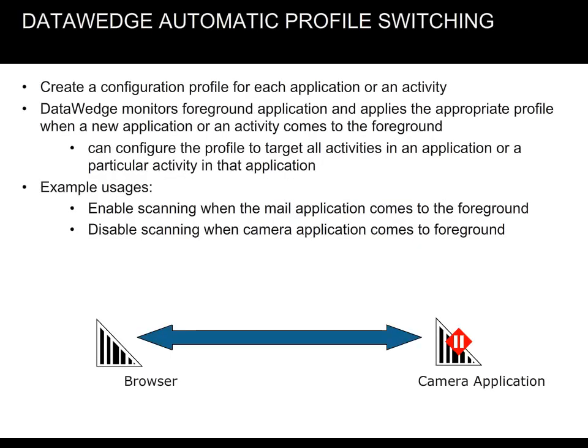With Data Wedge, you can create a configuration profile for each application or an activity. Data Wedge monitors the foreground application and applies the appropriate profile when a new application or activity comes to the foreground, and can configure the profile to target all activities in an application or a particular activity in that application. For example, it can be used to enable scanning when the mail application comes to the foreground, or to disable scanning when the camera application comes to foreground.